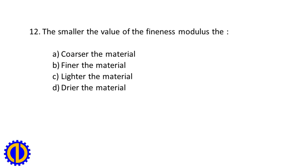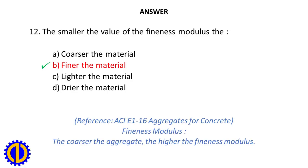Question 12. The smaller the value of the fineness modulus, the: A. Coarser the material. B. Finer the material. C. Lighter the material. D. Dryer the material. Answer: B. Finer the material. Reference: ACI E1-16, Aggregates for Concrete. The coarser the aggregate, the higher the fineness modulus.